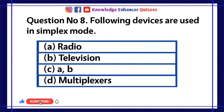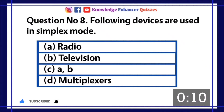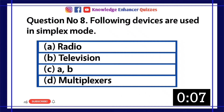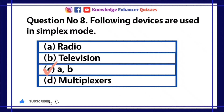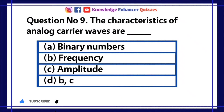Question number 8: Following devices are used in simplex mode. A. Radio. B. Television. C. A and B. D. Multiplexers. Option C is the right answer.